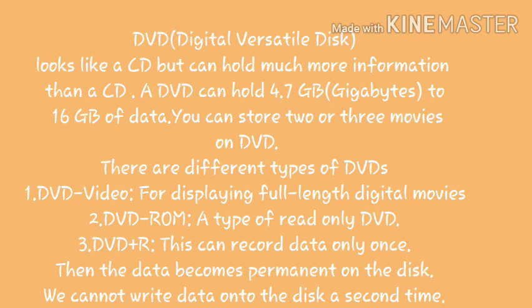There are different types of DVD. Let us look at all their features. DVD Video is for displaying full-length digital movies. DVD-ROM is a type of read-only DVD. DVD+R can record data only once — then the data becomes permanent on the disc and we cannot write data onto the disc a second time.